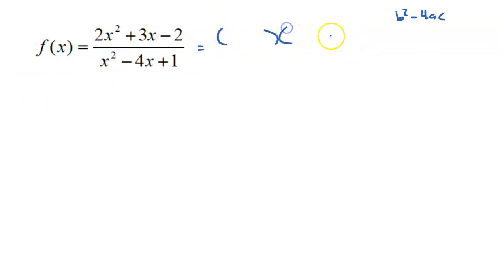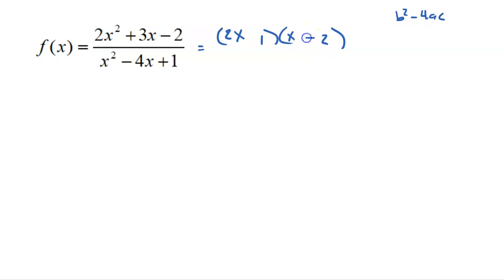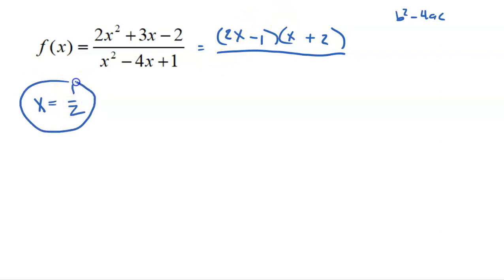Factoring the numerator 2x² + 3x − 2: two X times X, with two and one as factors. Placing positive two and negative one gives outside term 4X and inside term negative X, combining to 3X. So X equals one half and X equals negative two are the values that make the numerator zero. But I have to check the denominator to make sure neither of these also makes it zero.